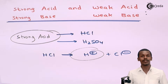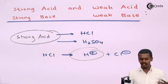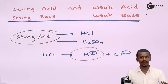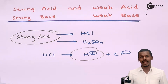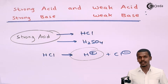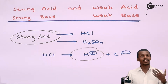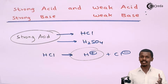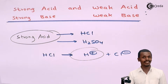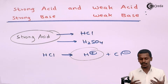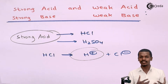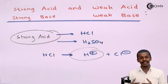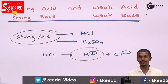Similarly, we can talk about weak acids. Weak acids are similar to weak electrolytes — they don't dissociate completely. For example, CH3COOH (acetic acid) is an acid which, when dissolved in water, doesn't dissociate completely, and that's why it is called a weak acid. It is still an acid because it gives H+, but since it does not dissociate completely it is classified as a weak acid.